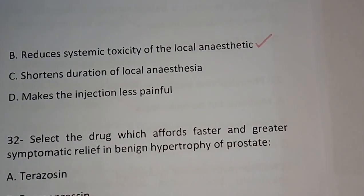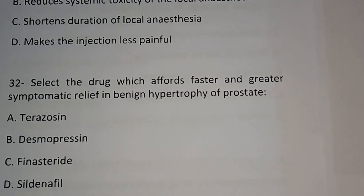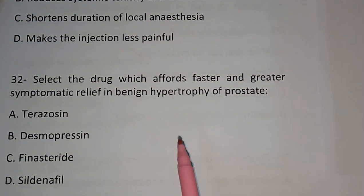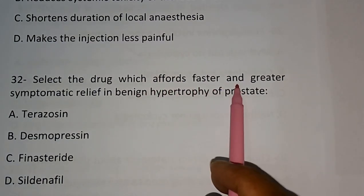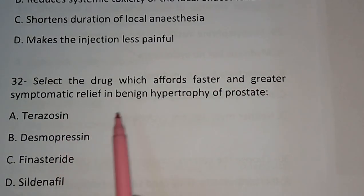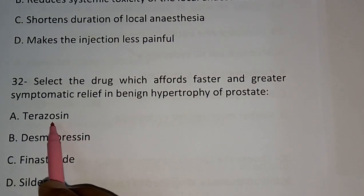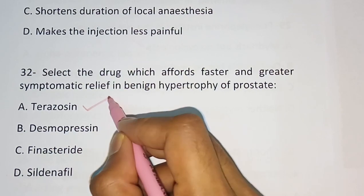Question number 32: Select the drug which affords faster and greater symptomatic relief in benign hypertrophy of the prostate. Options are: Terazosin, Desmopressin, Finasteride, Sildenafil. The correct answer is: Terazosin.